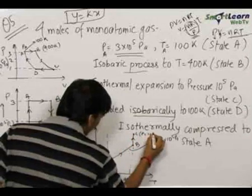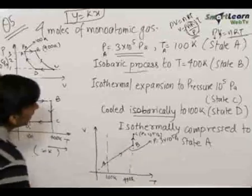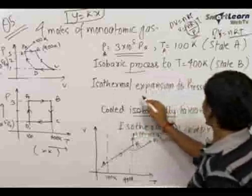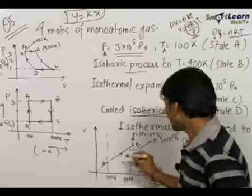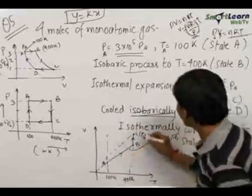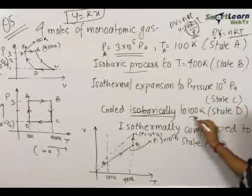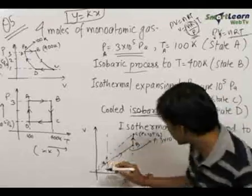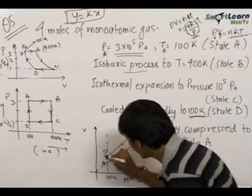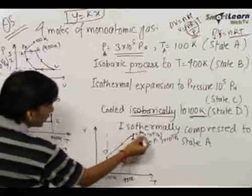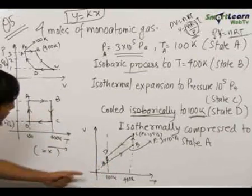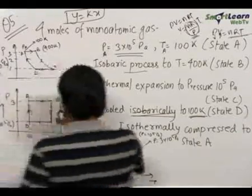From C it is cooled isobarically to 100 Kelvin — that is state D. Since it is again an isobaric process, it will again be a straight line passing through the origin at the new lower pressure of 10⁵ Pa. Point D lies at temperature 100 K on this process line. Finally, from D it is isothermally compressed back to state A — isothermal compression means constant temperature, so the volume decreases horizontally back to point A. That is what the final VT curve looks like.